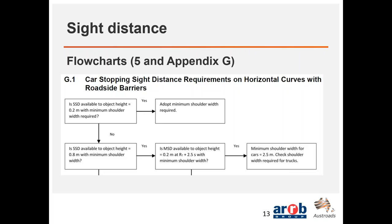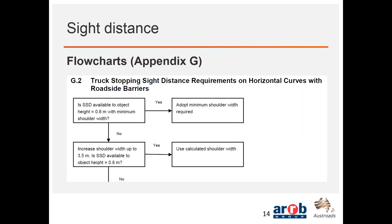There's an addition on the method of assessing sight distance at various points. The guide includes flowcharts first referenced in Section 5, and a new Appendix G has been incorporated. We have two flowcharts — one for cars' stopping sight distance around roadside barriers and horizontal curves, and a similar one for trucks. Stepping through the flowchart will assist designers to assess sight distance around horizontal curves where there are barriers or obstructions.